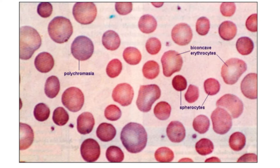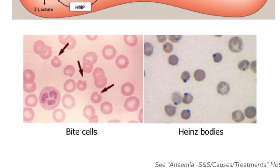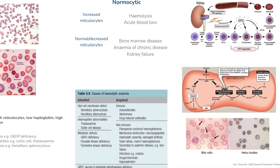Interestingly, these mutations are protective against malaria. Down here we see bite cells, where it looks like there is literally a bite taken out of the cell, and Heinz bodies, which are inclusions within the red cell of denatured haemoglobin. This is often seen in G6PD deficiency.